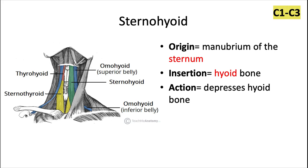And lastly we have the sternohyoid muscle. It originates also from the manubrium of the sternum, and it's going to insert all the way up at the hyoid bone. This one is going to depress the hyoid bone.